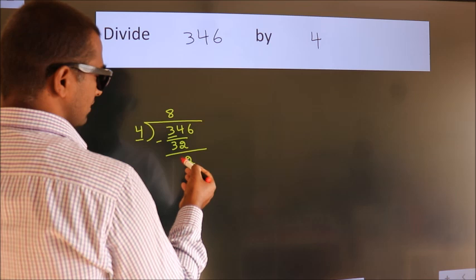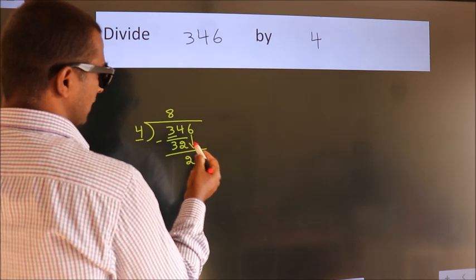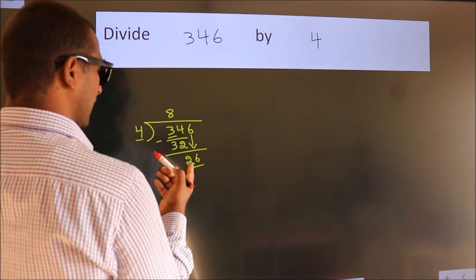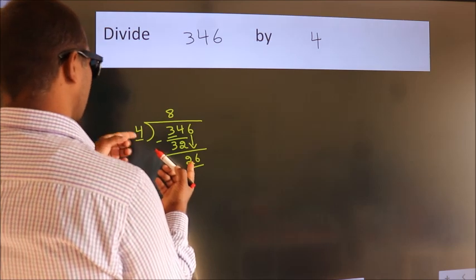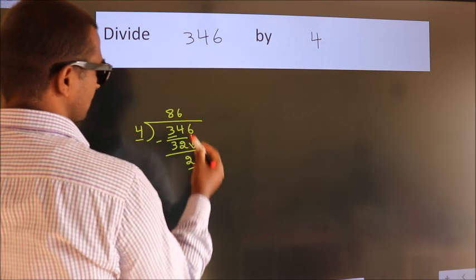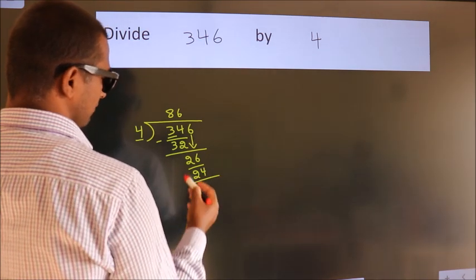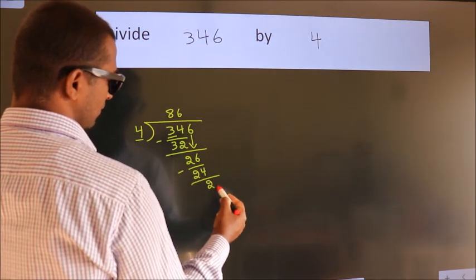After this, bring down the beside number. So 6 down. So 26. A number close to 26 in 4 table is 4 times 6, 24. Now we subtract. We get 2.